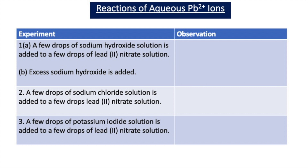In experiment two, we're going to add a few drops of sodium chloride solution to a few drops of lead nitrate solution and write down the colour of the precipitate. In part three, we're going to add a few drops of potassium iodide solution to a few drops of lead nitrate solution and record the colour of the precipitate that forms.